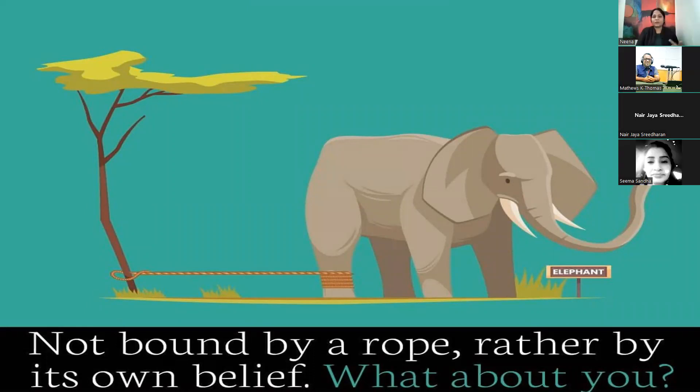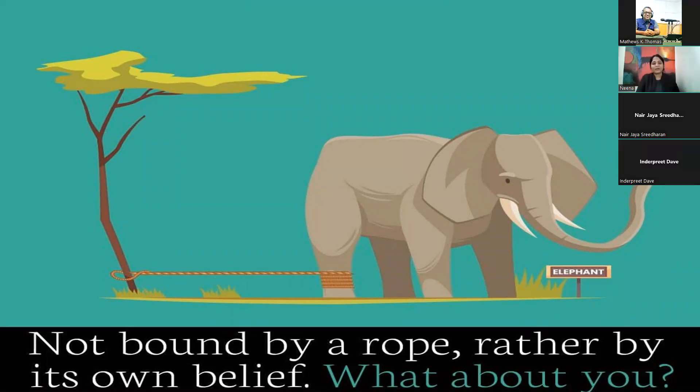The elephant was again used to being tied to a rope and never tried again. Even if he was free, the mindset was built that I'm tied to the tree and I cannot go anywhere else. I have to stay here. That's the whole idea of tying the elephant to the rope.